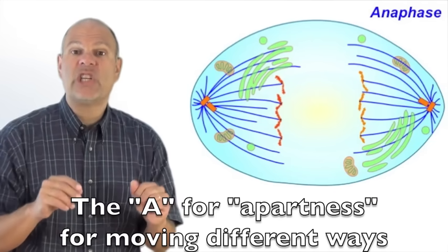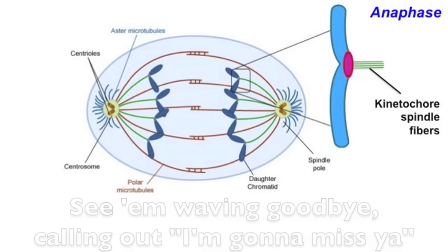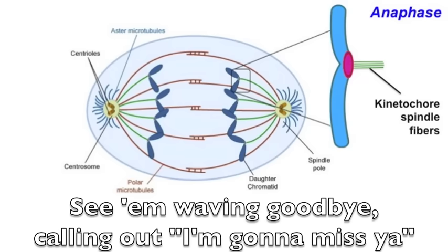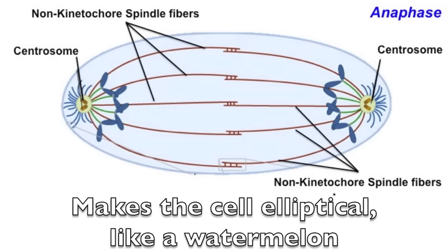The A for apartness, for moving different ways. Kinetochore spindle fibers separate the sisters. See, I'm waving goodbye, calling out I'm gonna miss ya. And the other spindle fibers pushing like felons makes the cell elliptical like a watermelon.